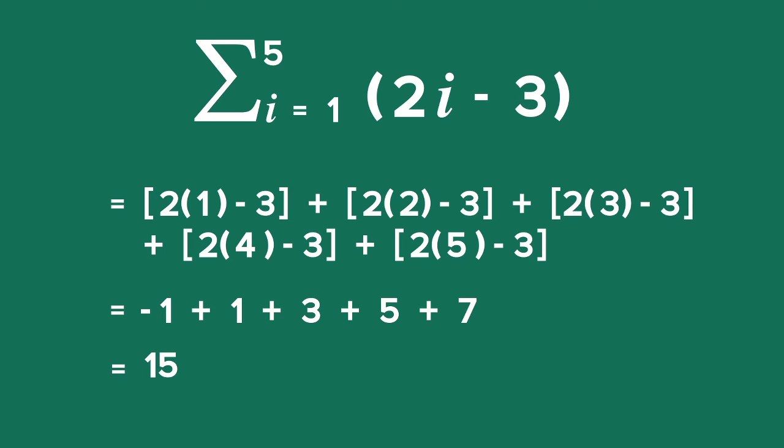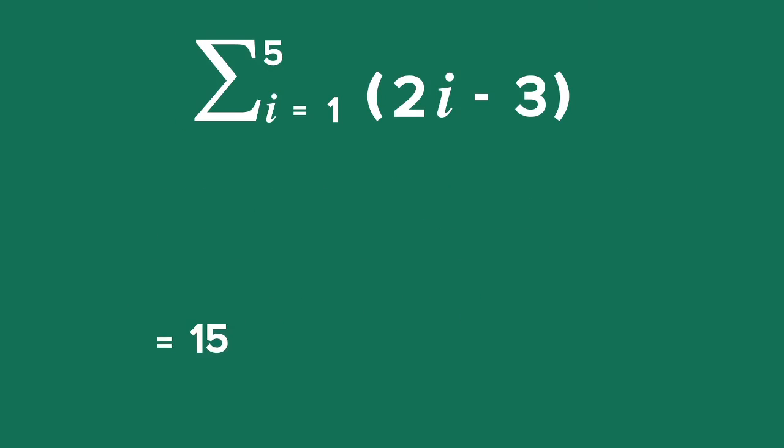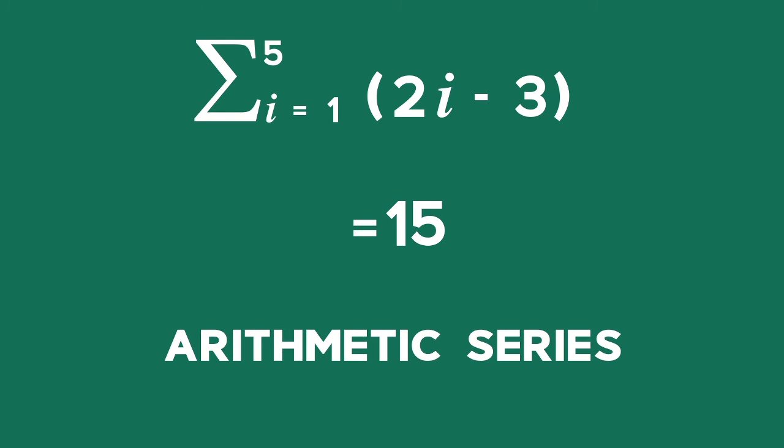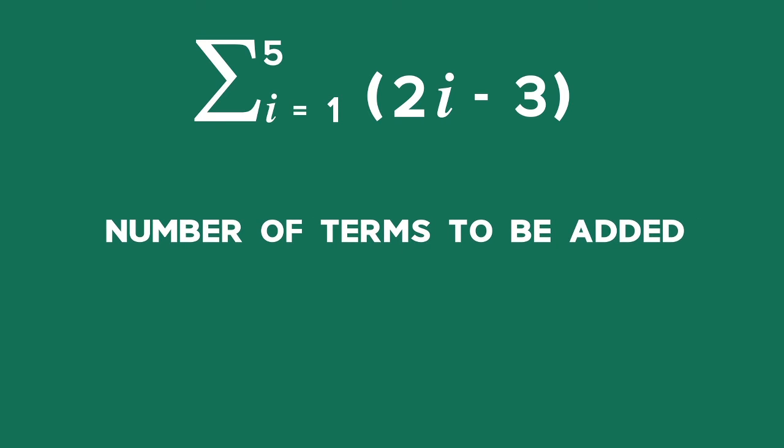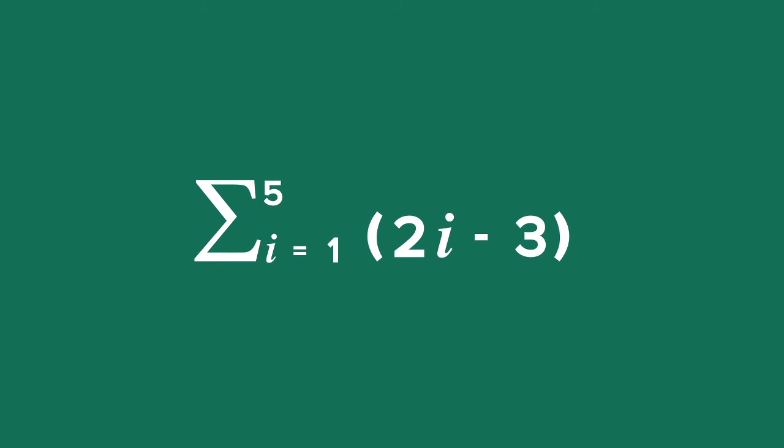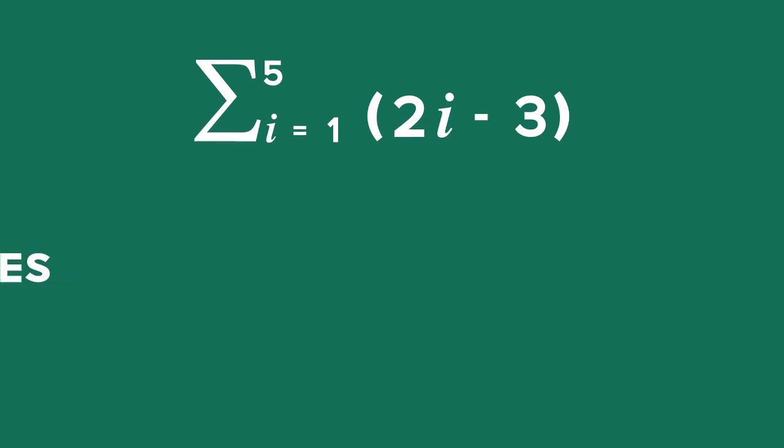We say that the sum of the first five terms in this arithmetic sequence is equal to 15. This was an example of an arithmetic series. Number of terms to be added: Starting from i equals 1 and adding all the terms up to the fifth term, we can calculate that there are five terms in this series.